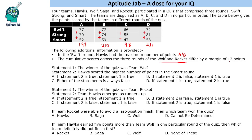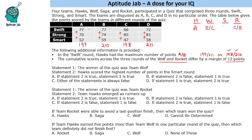Wolf and Rocket differ by a margin of 12 points, so either they are 199 and 211 or 198 and 210. Now we will list possible assignments. If Hawk is Team A, the total is 199, then the remaining two teams — Wolf and Rocket — will be B and C with totals 210 and 198. Saga will be Team D.